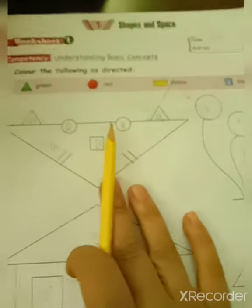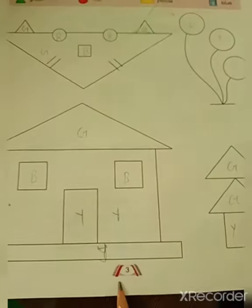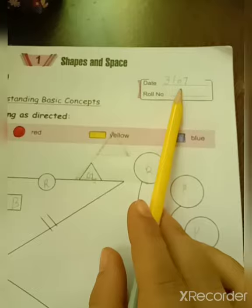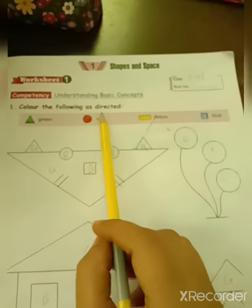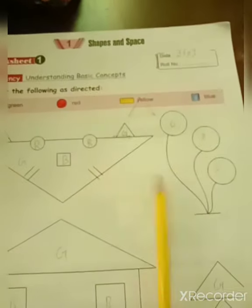Hello, good morning, children. Today we are going to do Chapter 1 in our Word Book. This is your Chapter 1 in your Word Book, page number 3. First of all, you will write date 3rd July. Question number 1: Color the following as directed. As you can see, we have to color it.